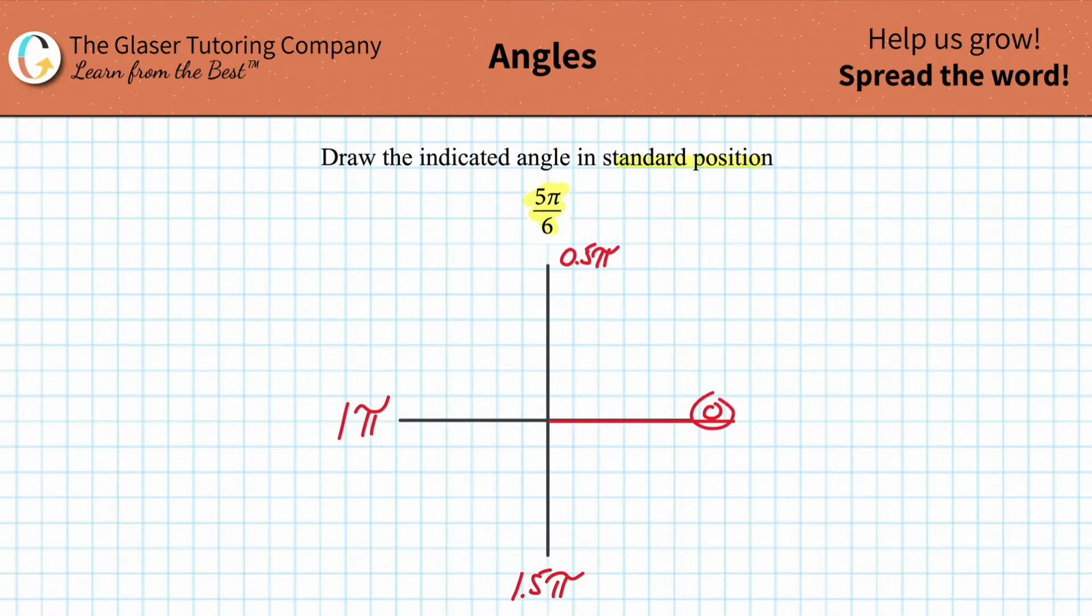So in other words, we start at zero, we rotate counter-clockwise. The first stop is going to be half pi radians. The stop after that is pi radians. The stop after that is 1.5 pi radians. And the stop after that, if we rotate it all the way around, would be 2 pi radians.